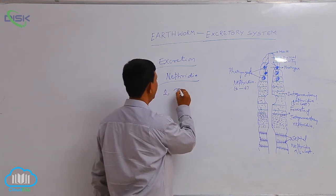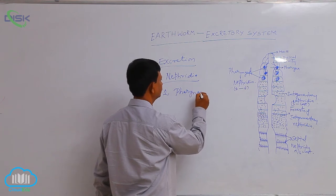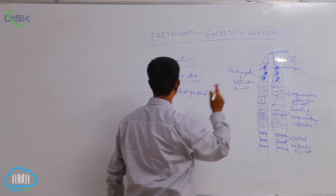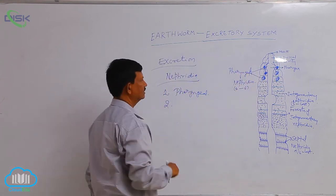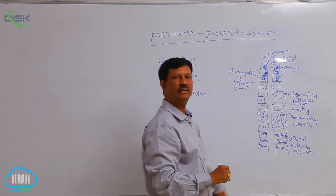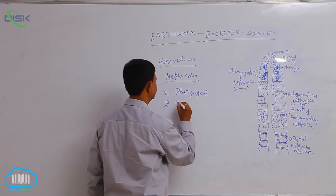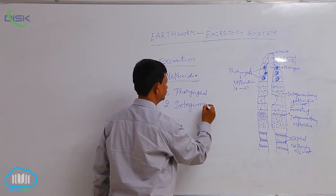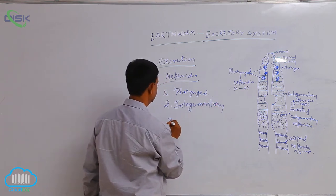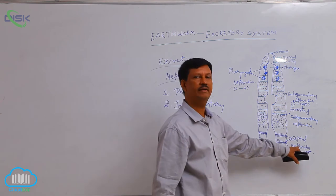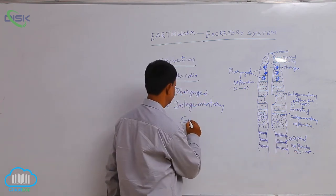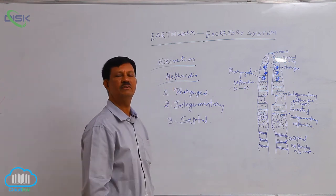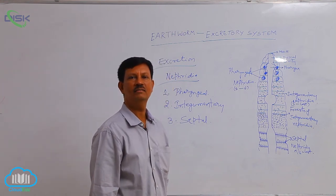The first type is pharyngeal nephridia. The second type is integumentary nephridia. The third type is septal nephridia. These are the three types of nephridia found in earthworm.